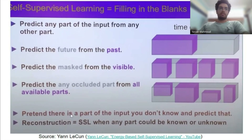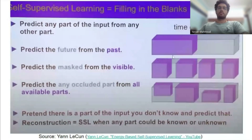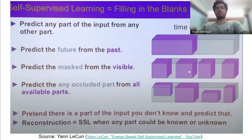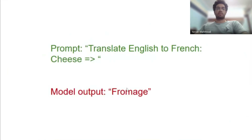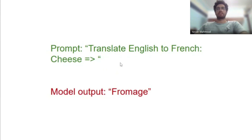The interesting thing is that when these models get bigger, even though they're trained on a very generic objective and not explicitly trained on specific tasks, they end up having what deep learning folks call emergent behaviors — they are able to perform decently on various tasks without being explicitly programmed to. For example, if you give GPT-3 a prompt, it will be able to translate 'cheese' to French.